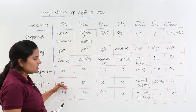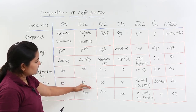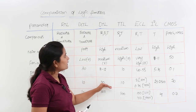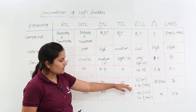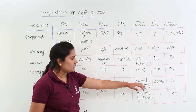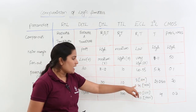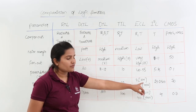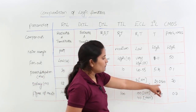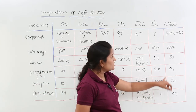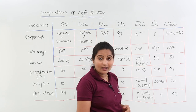Coming to propagation delay: RTL takes 12 nanoseconds, DCTL takes 10 ns, DTL takes 30 ns, TTL takes 10 ns, ECL 10K series takes 2 ns, ECL 100K series takes 0.75 ns, I²L takes 25 to 2500 ns, and CMOS has a high propagation delay.